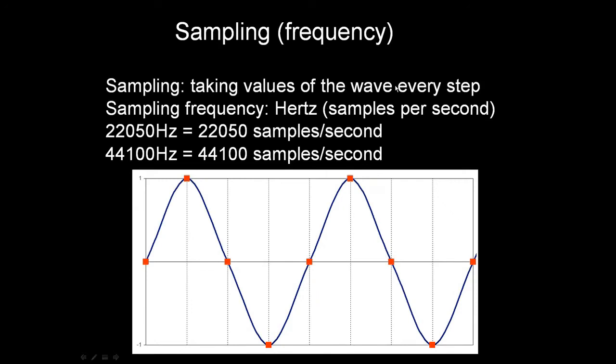The first one, sampling, consists of taking values of the wave every step, every little piece of time. For instance, we take one point, another point, another point, always at the same time interval.